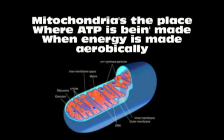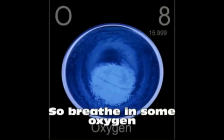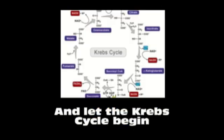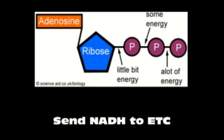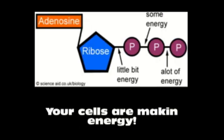Mitochondria is the place where ATP is being made, when energy is made aerobically. So breathe in some oxygen and let the Krebs cycle begin. Send NADH to ETC.